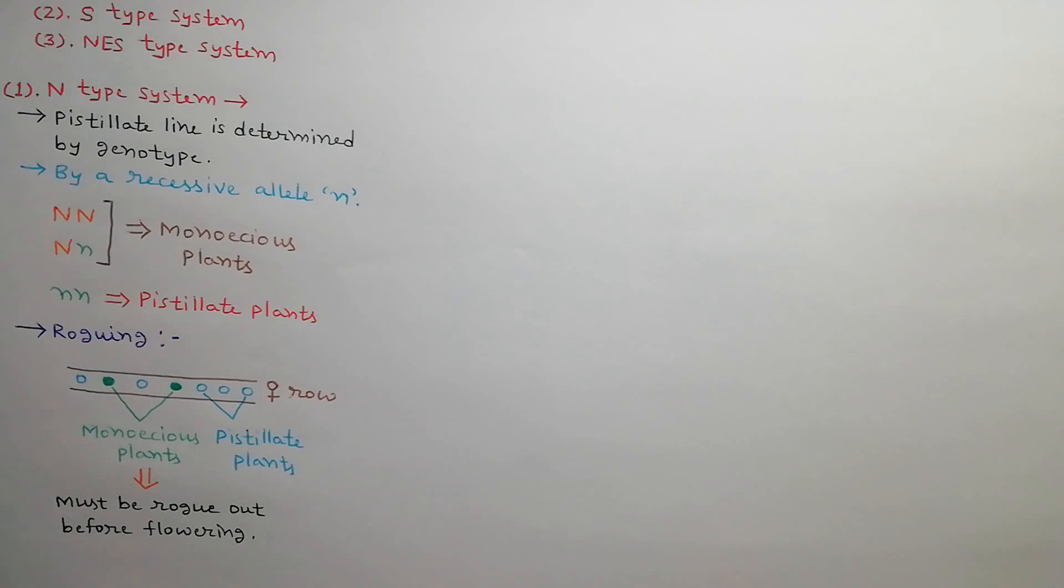During hybrid seed production, in female row there may be some monoecious plants along with pistillate plants. These monoecious plants must be rogued out before flowering. Pistillate line can be maintained by crossing with heterozygous monoecious plants. As a result, 50% pistillate plants are obtained in each generation.